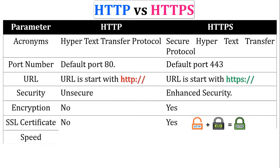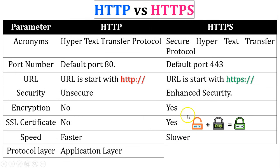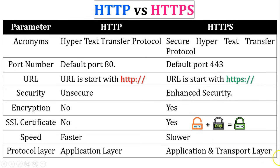Regarding speed, HTTP is faster than HTTPS because there is no encryption process during communication. HTTPS is slower than HTTP due to the encryption process. Regarding protocol layer, HTTP is an application layer protocol. HTTPS uses both HTTP and SSL/TLS, where HTTP operates at the application layer and SSL/TLS operates at the transport layer, so HTTPS executes at both the application and transport layers.